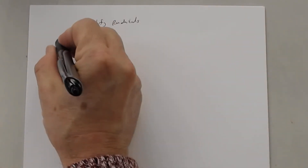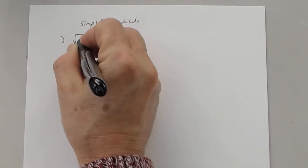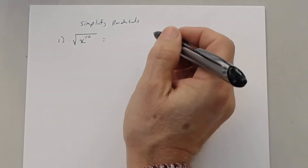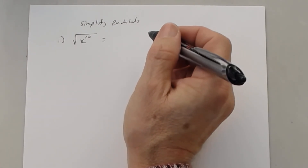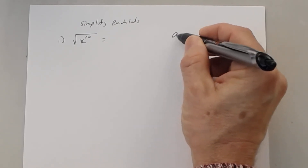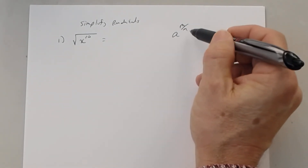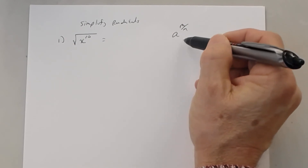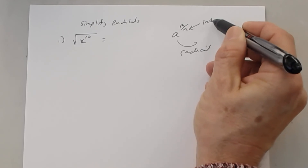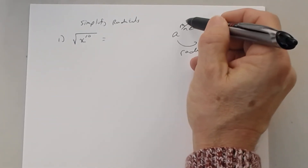Last class period we talked about the square root of x to the 10th. Do you remember what that simplifies to? x to the fifth. There's a property you learned: if you have a to the m divided by n — when your exponent is a fraction — you can write this as a radical, where the denominator is your index and the numerator is your exponent.